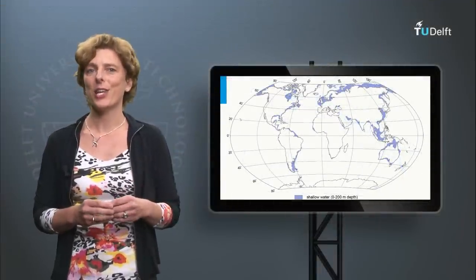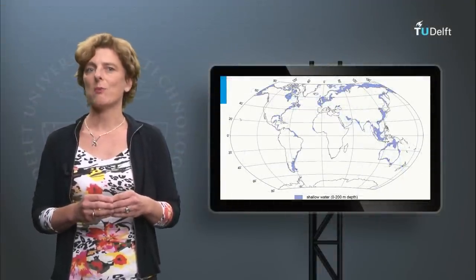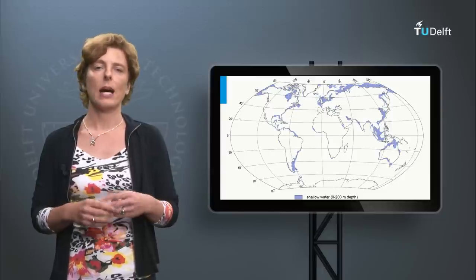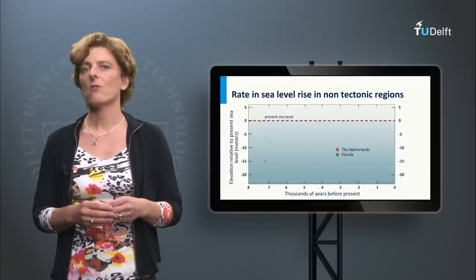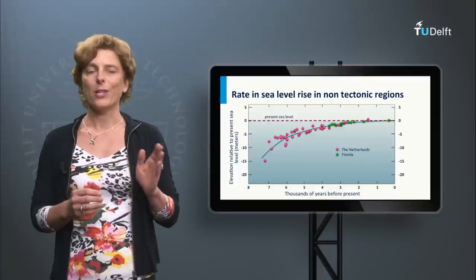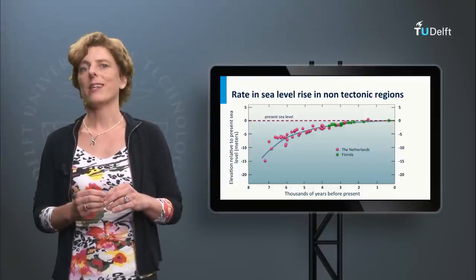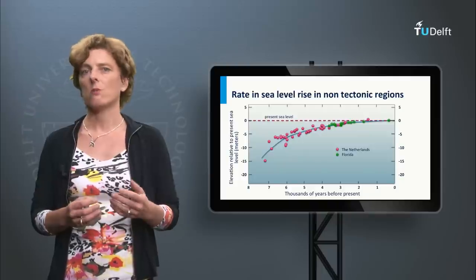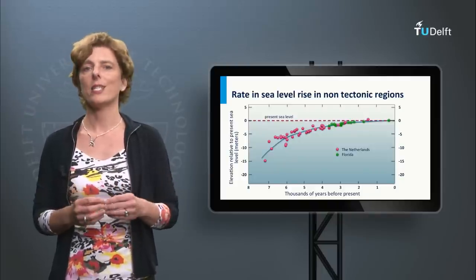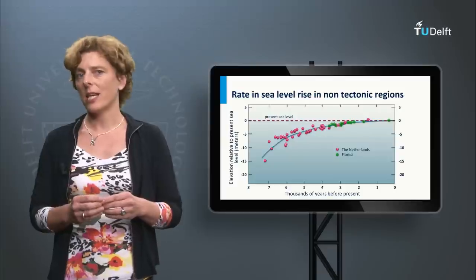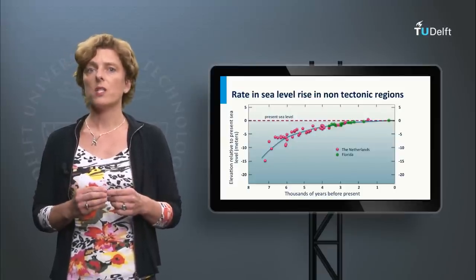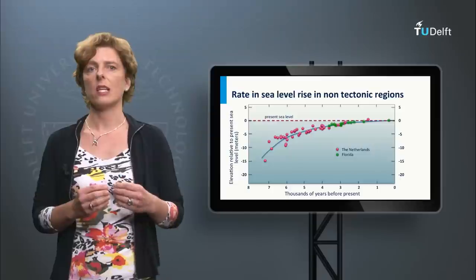The drowning of the continental shelves since the last glacial maximum was due to the rather large rates of sea level rise. However, in the last thousands of years, the rate of sea level rise has levelled off to about 1 to 3 mm per year in the last century. As a result, this eustatic or absolute sea level rise is presently of secondary importance. This can of course change again if the rate of sea level rise increases significantly in the future.